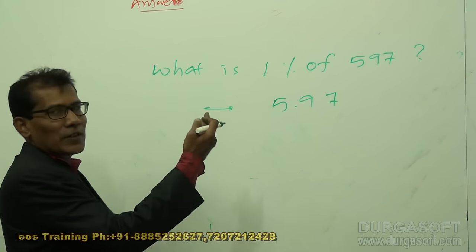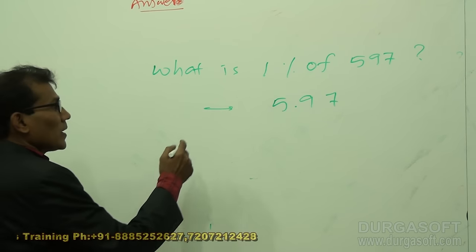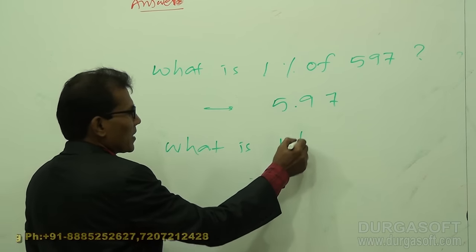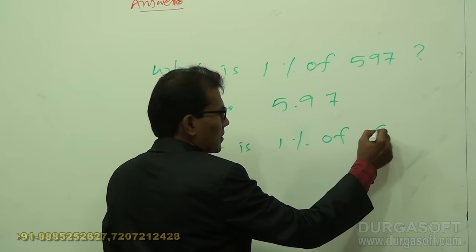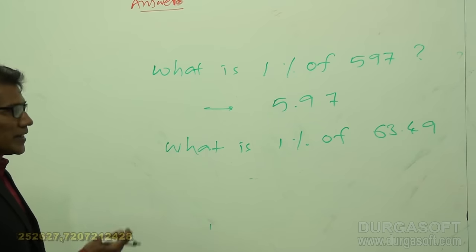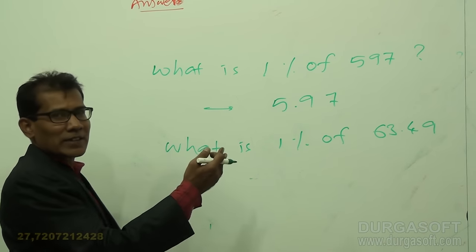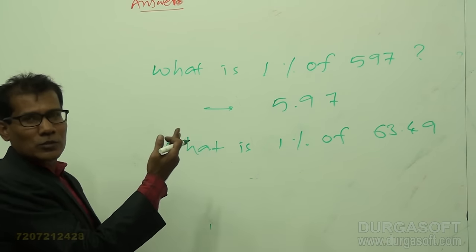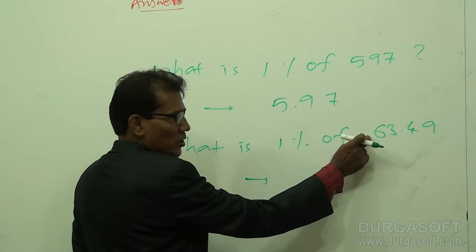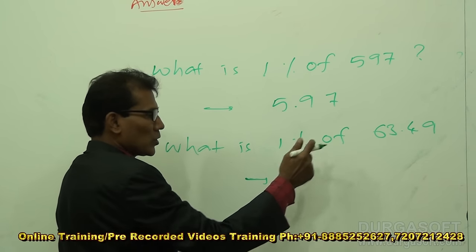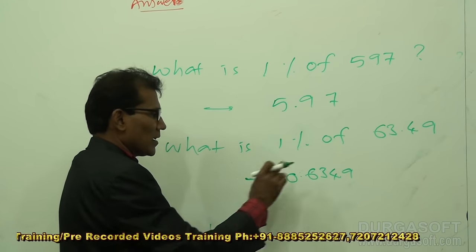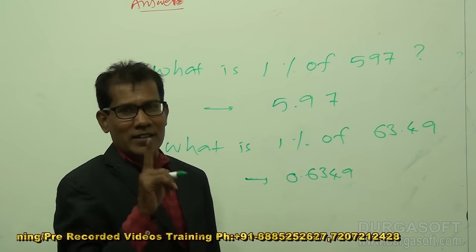If a dot already exists when calculating 1%, move it two steps backward. For example, 1% of 633.49 — move the existing dot two steps back. Since no digit precedes it, the answer is 0.6349. You can calculate 1% or 10% in just one to two seconds.